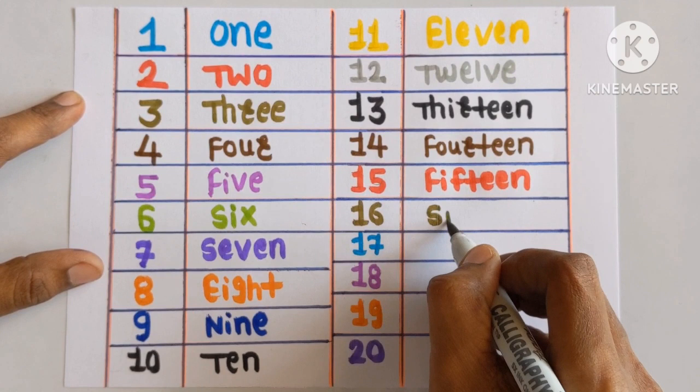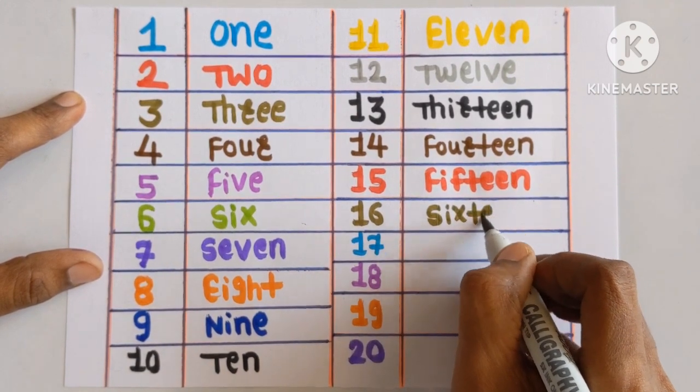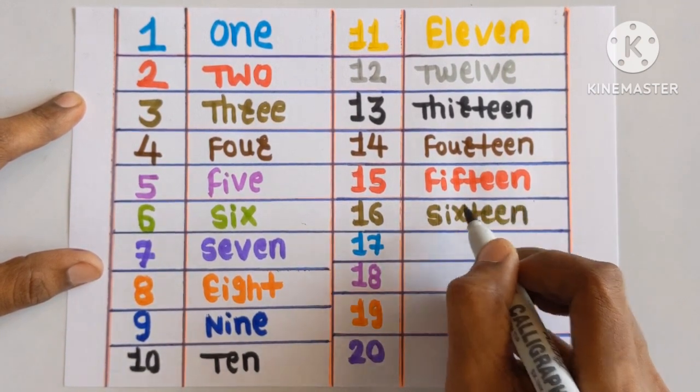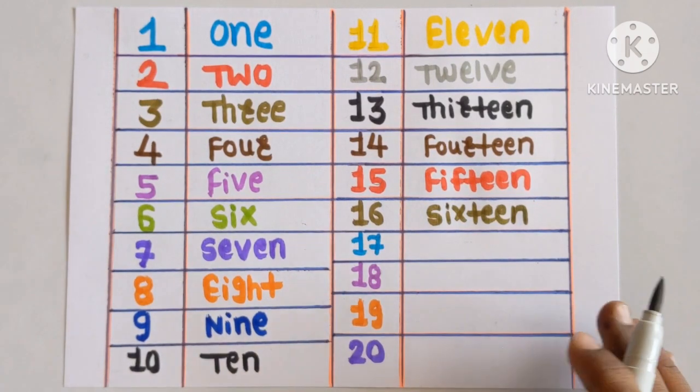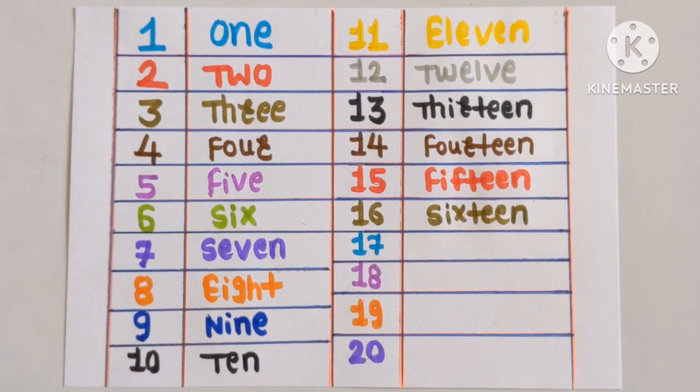Number 16: S-I-X-T-E-E-N. Sixteen. Olive green color.